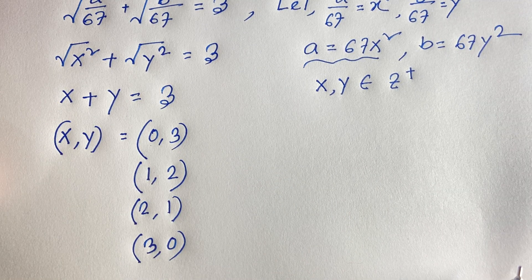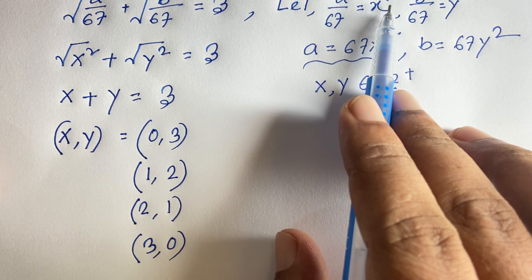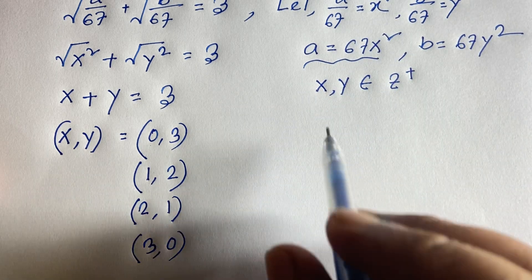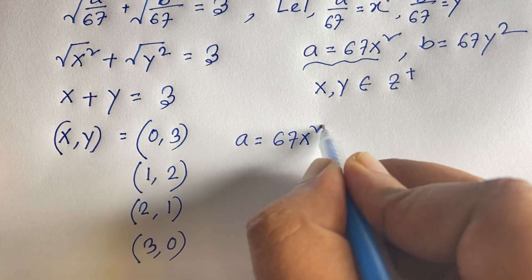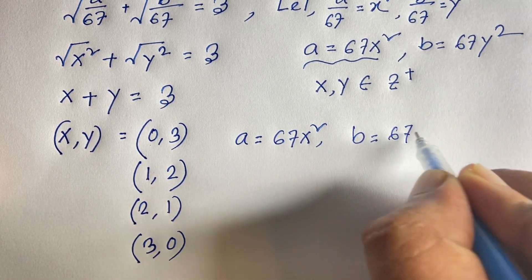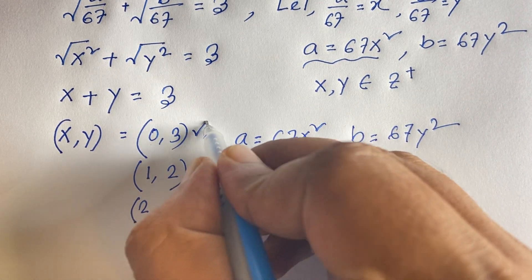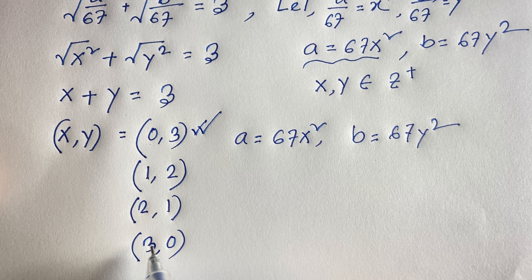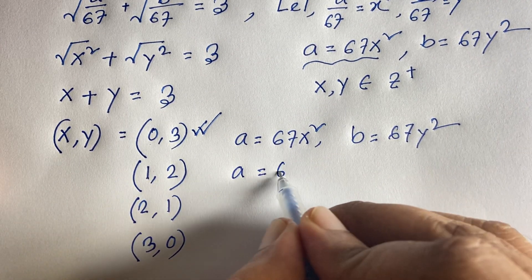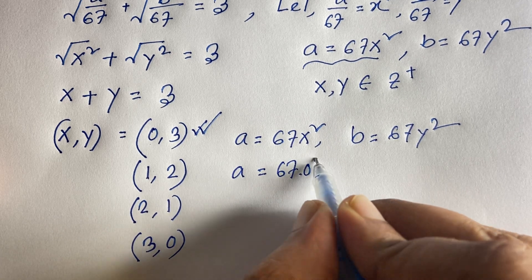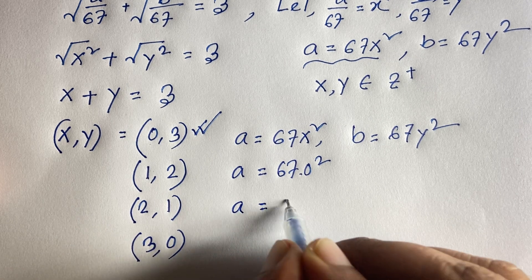Remember that a = 67x² and b = 67y². For the first case, x = 0 and y = 3: a = 67 × 0² = 0, and b = 67 × 3² = 67 × 9 = 603. So a = 0, b = 603.